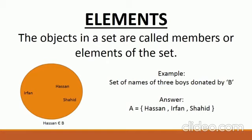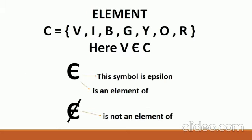The objects in a set are called elements or members of the set. For example, set of three boys denoted by set B — Hassan, Irfan, and Shahid. The symbol epsilon (∈) means 'is an element of,' and a crossed epsilon (∉) means 'is not an element of.' So this is how to represent a set.